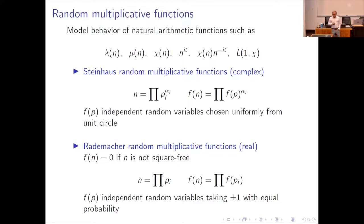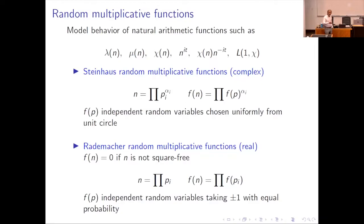The reason for studying random multiplicative functions is the hope that they might model behavior of arithmetic functions that are difficult for us to understand, like the Möbius function, or n to the it if you want to think about the zeta function, or Dirichlet characters, or some mix of these. Or also to understand properties of objects that we like, such as L(1, chi), which is the sum of chi(n) over n. You can think of the values of chi(n) as being modeled by a random multiplicative function, and that is something that Andrew and I worked on many years back, making it precise and making it precise in the tails.